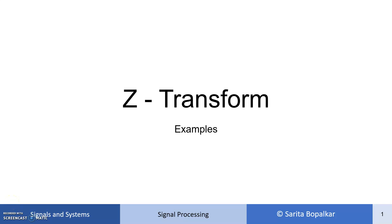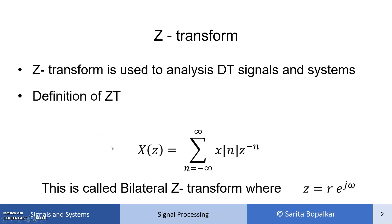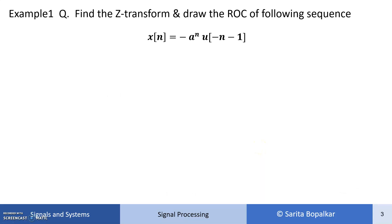Hello and welcome. Here we will solve one more example based on Z transform. This is the definition of Z transform, which we have already studied. X of Z is equal to the summation where n varies from minus infinity to infinity of X of n times Z raised to minus n. Let's start the example.